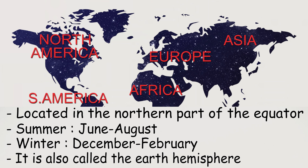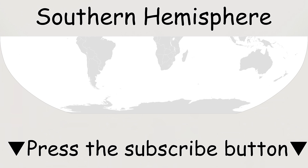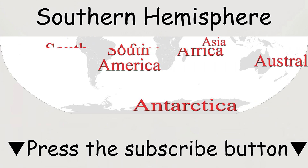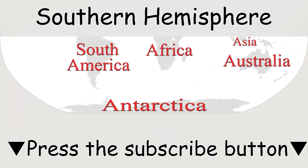The northern hemisphere continents are Asia (except Indonesia, which mainly lies in the southern hemisphere), Europe, North America, a small part of South America, and about two-thirds of Africa. The southern hemisphere represents the earth's land to the south of the equator, including Antarctica, Australia, the largest part of South America, and parts of Africa and Asia.